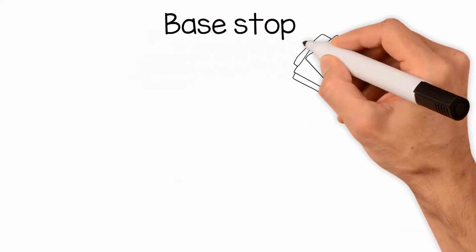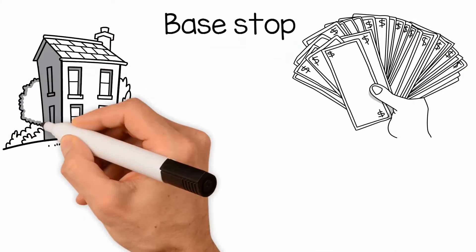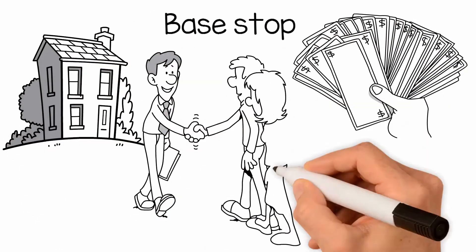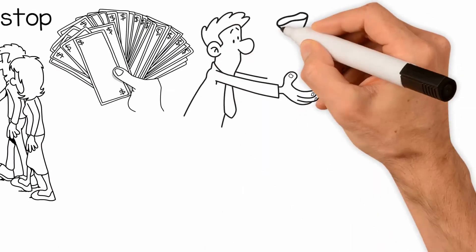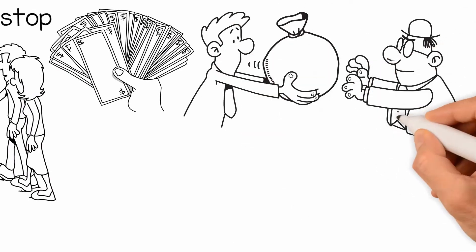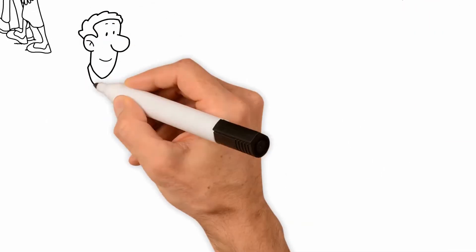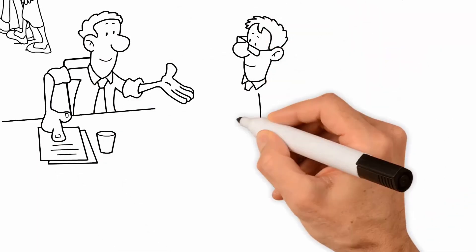Base stop is a fixed dollar amount of operating expenses related to the tenant's leased premises that the landlord pays. The tenant is obligated to pay expenses exceeding that amount. Regardless of method, the tenant will be responsible for paying the operating expenses over the base year or base stop amount.